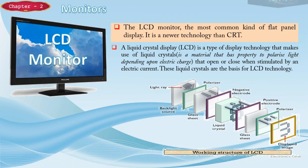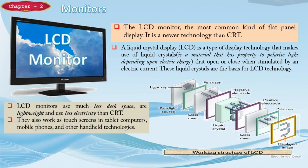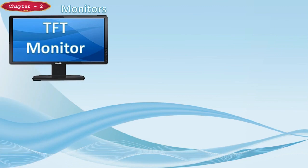You can see in this picture: at the back there is a backlight source, in the middle there is a liquid crystal, and on both sides of the liquid crystal there are negative and positive electrodes. When electric charges are passed through the liquid crystal, it gets polarized and generates pixels, which in turn generate an image. Advantages of LCD monitors: they use less desk space, are lightweight, use less electricity than CRT monitors, and also work as touch screens in tablet computers, mobile phones, and other handheld devices.